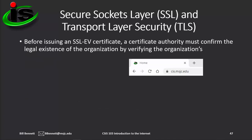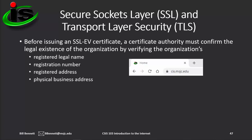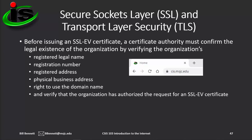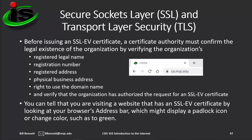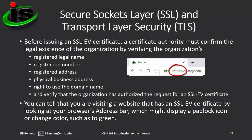Before issuing an SSL-EV certificate, a certificate authority must confirm the legal existence of the organization by verifying the organization's registered legal name, registration number, registered address, physical business address, their right to use the domain name, and verify that the organization has authorized the request for an SSL-EV certificate. You can tell that you're visiting a website that has an SSL-EV certificate by looking at your browser's address bar. In Chrome, the green site information icon and the padlock icon indicate a secure connection. Notice that the URL also includes the HTTPS indicator, which shows that the browser has made a secure connection to the website.